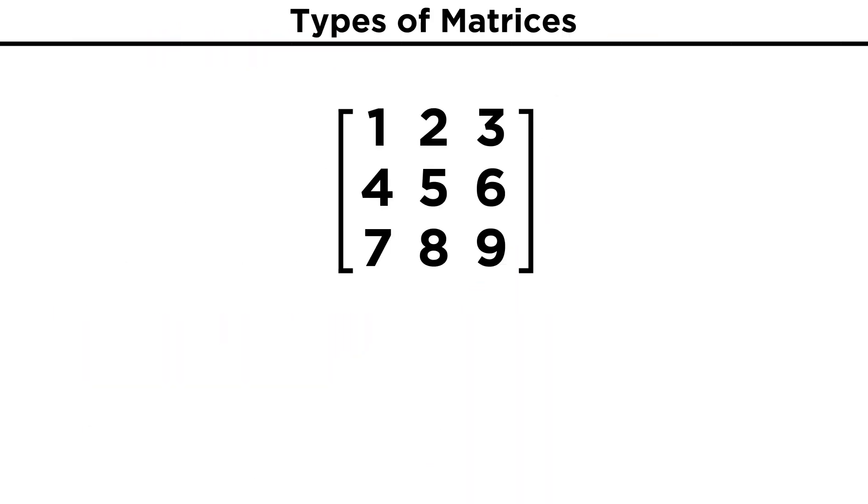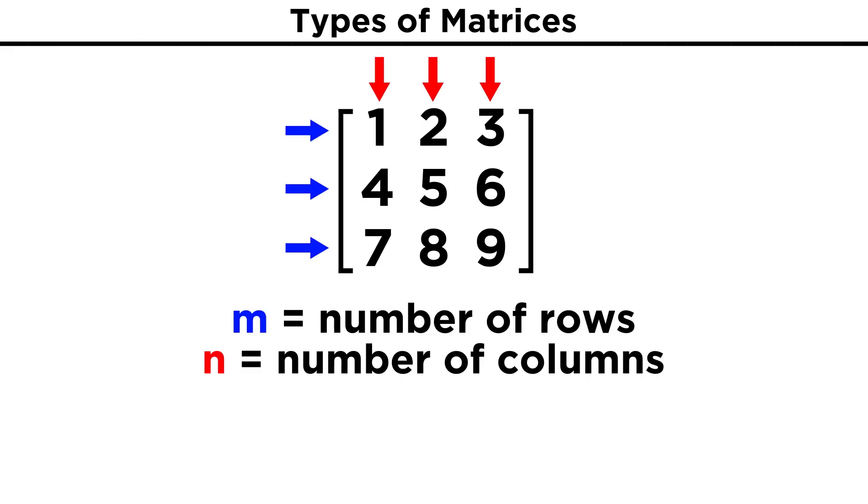First, let's cover some definitions that may come in handy. We know that any matrix will have some number of rows and some number of columns. If the number of rows and columns is the same, that is called a square matrix.